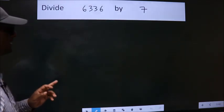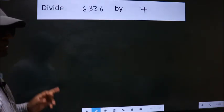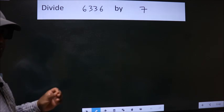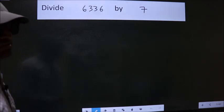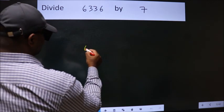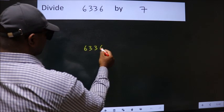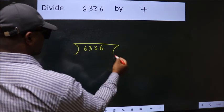Divide 6336 by 7. To do this division, we should frame it in this way. 6336 here, 7 here.